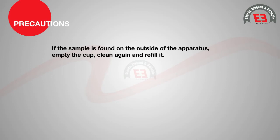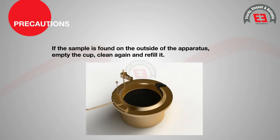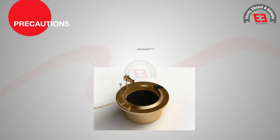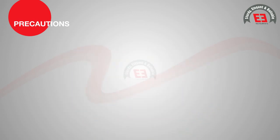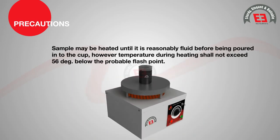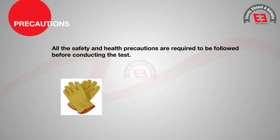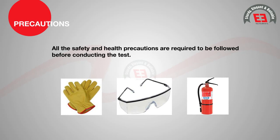Excess sample should be removed by pipette or other device. If sample is found on the outside of the apparatus, empty the cup, clean again, and refill it. If any air bubble is found on the surface of the sample, discard the test. The sample may be heated until it is reasonably fluid before being poured into the cup; however, the temperature during heating shall not exceed 56 degrees Celsius below the probable flash point. All safety and health precautions are required to be followed before conducting the test.